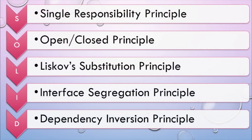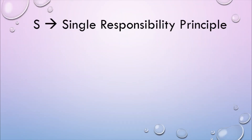So what does the SOLID principle actually mean? It's just an acronym for five principles. S stands for Single Responsibility Principle, also known as SRP. Then we have Open Closed Principle. After that we have Liskov Substitution Principle. For I, we have Interface Segregation Principle. And for D, we have Dependency Inversion Principle. Let's try to understand what all these principles mean one by one with examples.